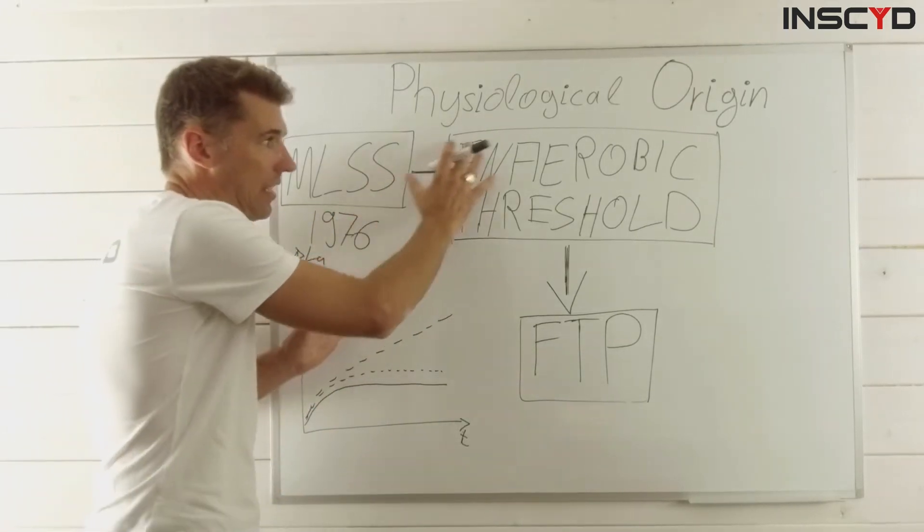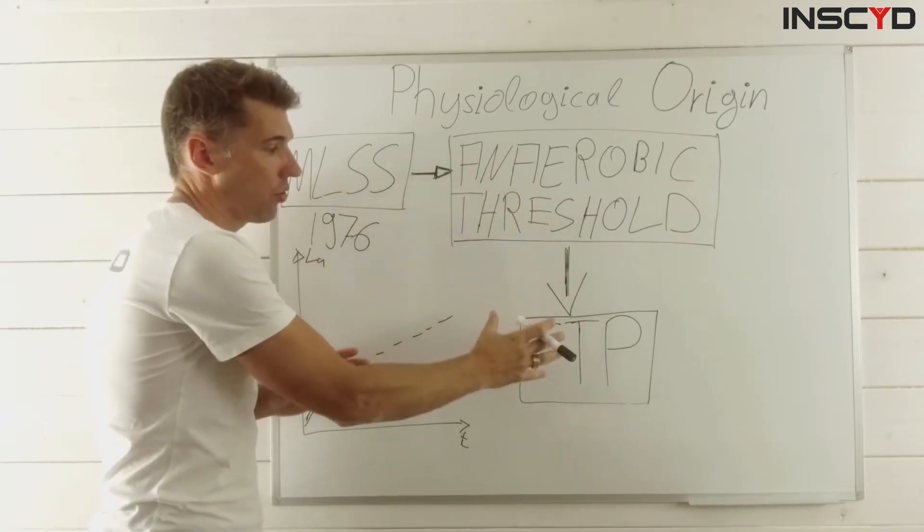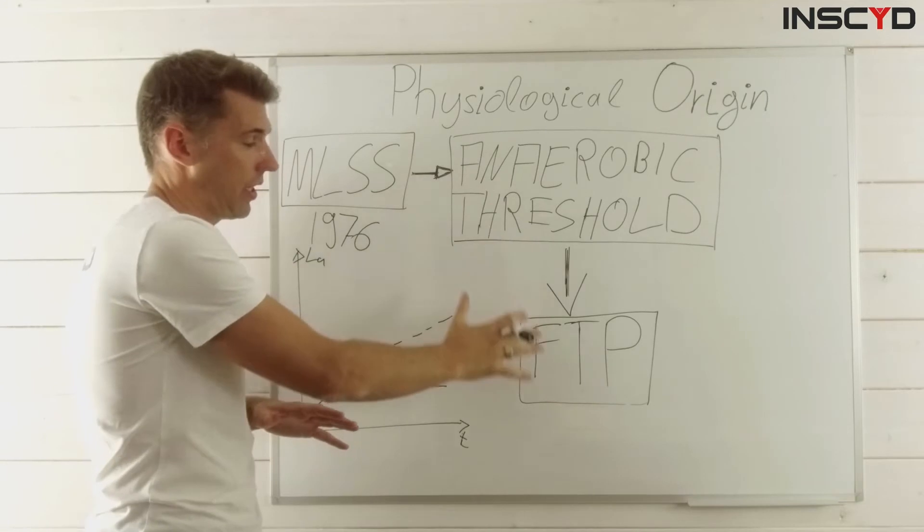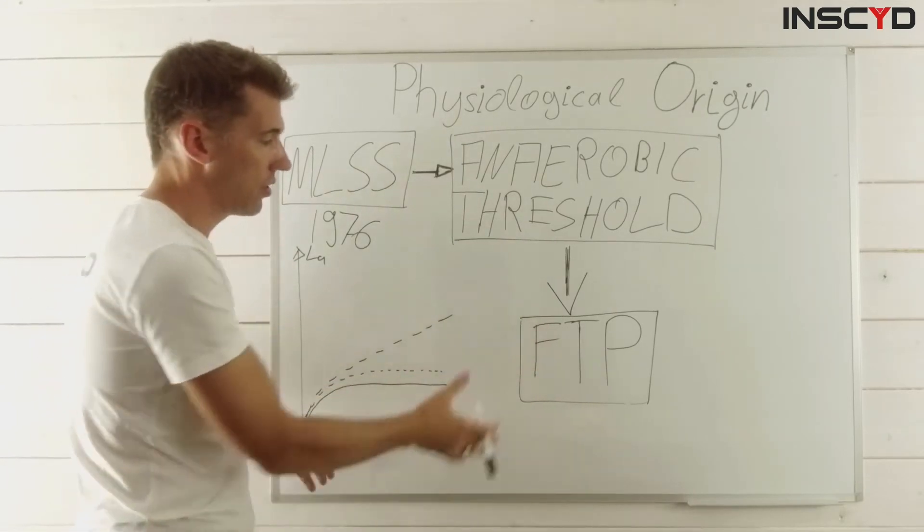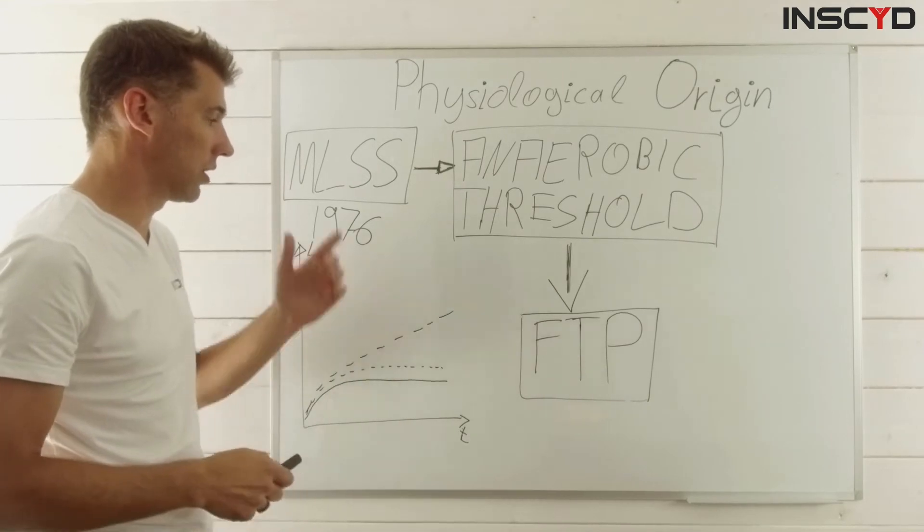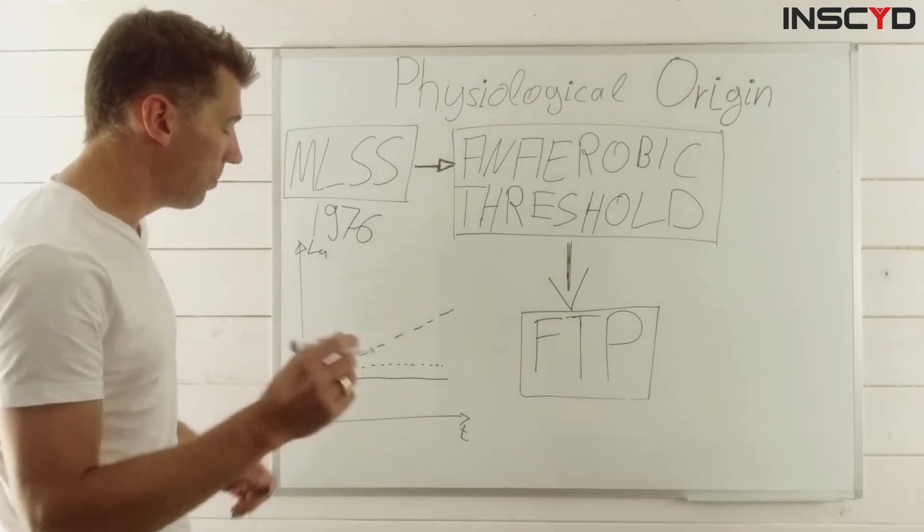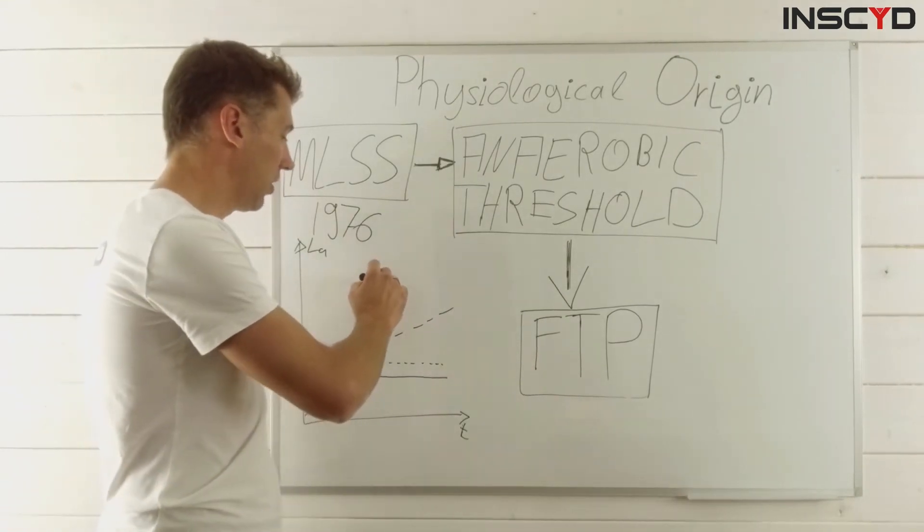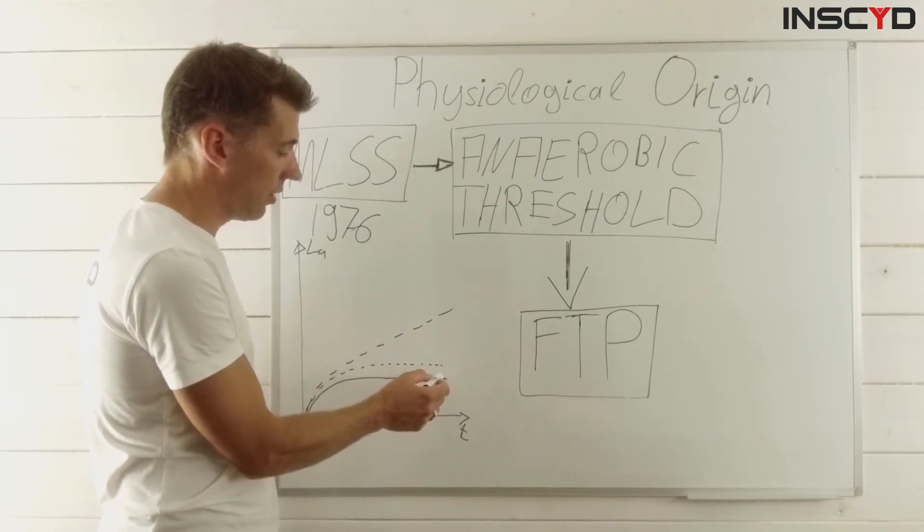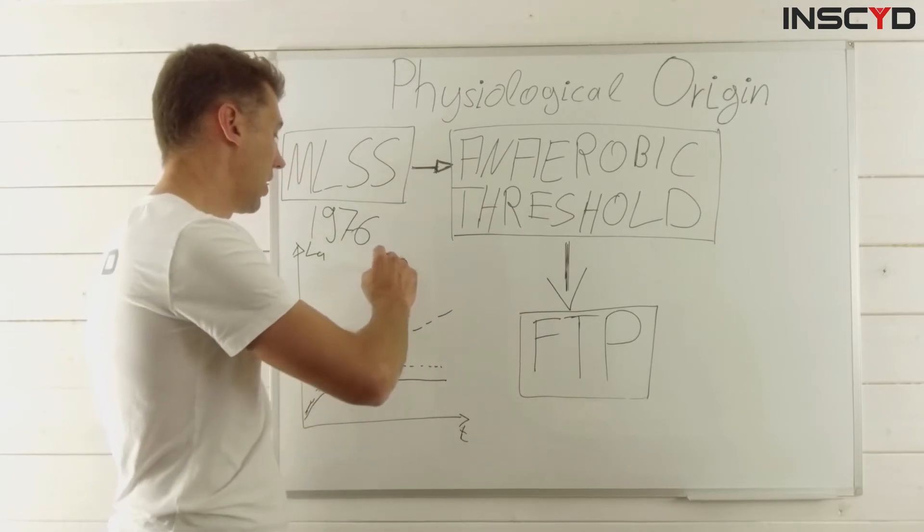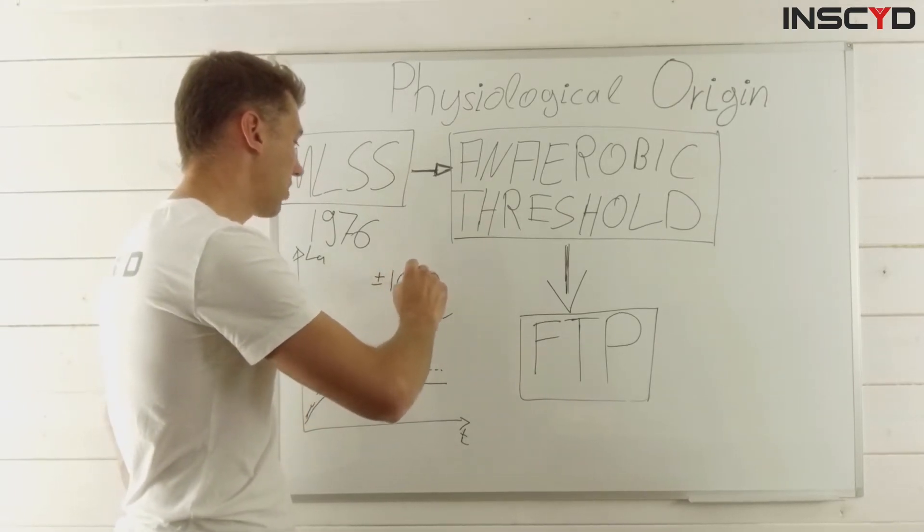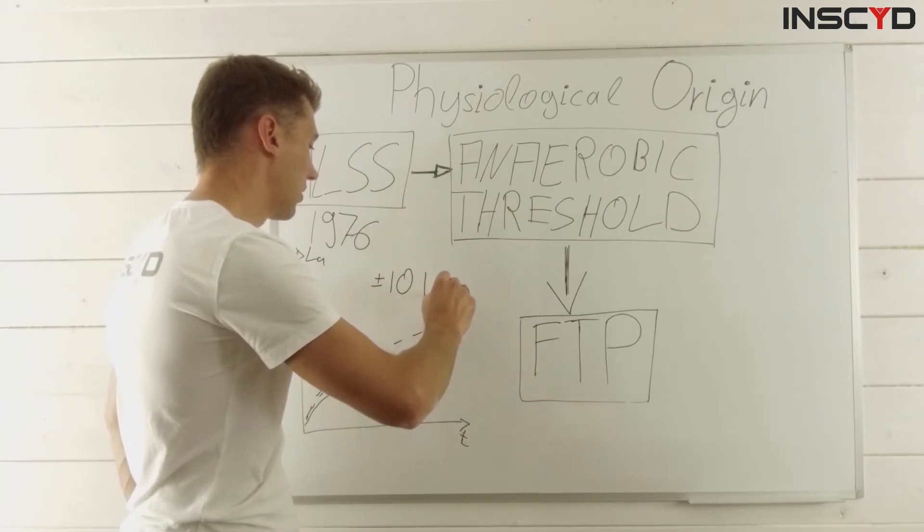And again, this is then what anaerobic threshold or FTP are trying to do via a lactate profile test, or via whatever kind of test using power data these days from your bike or run. And what might be interesting to know is that the differences, so the jumps in intensity from this lactate curve to this one to this one, normally you're looking at changes of approximately 10 watts.